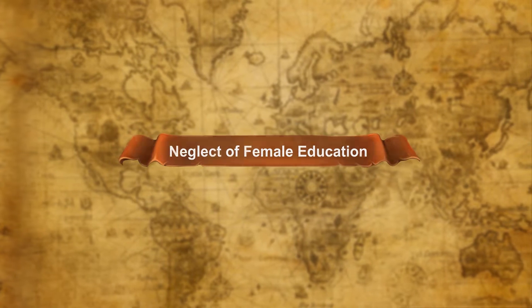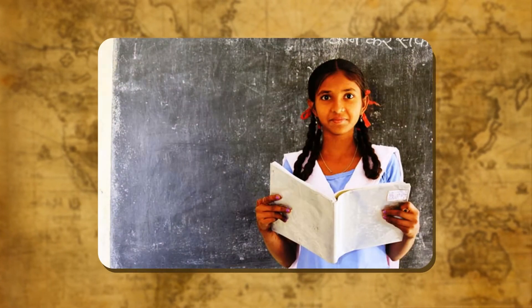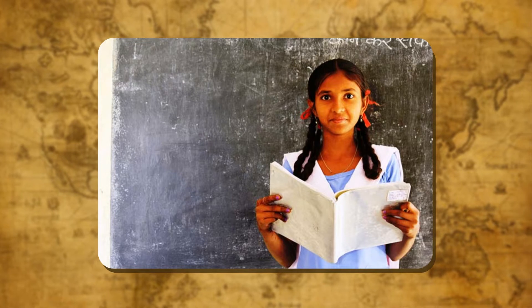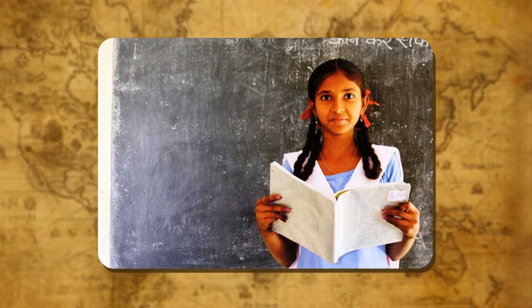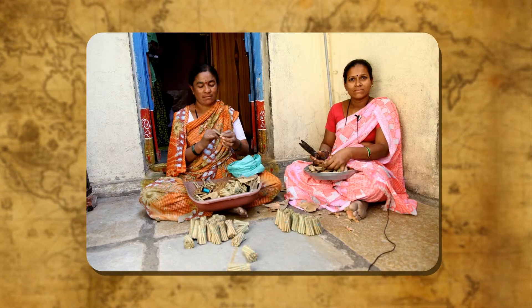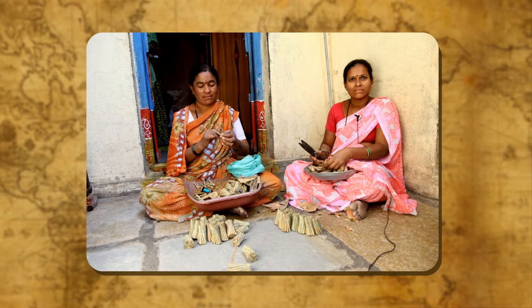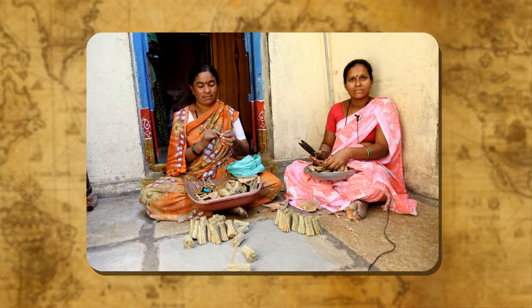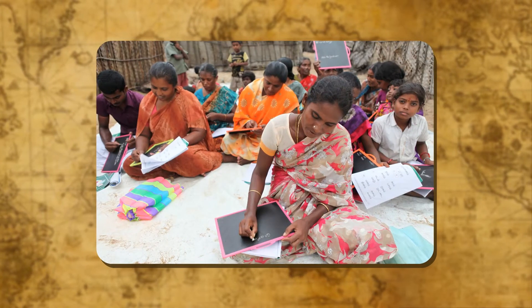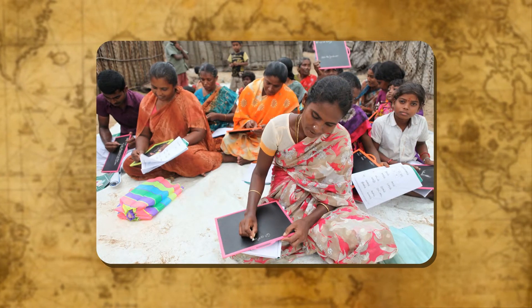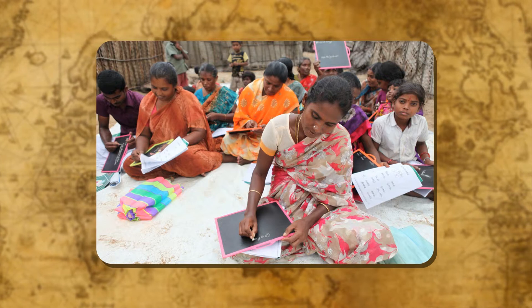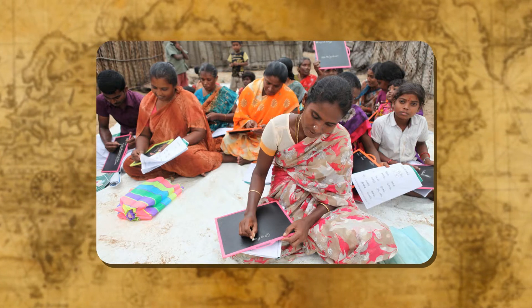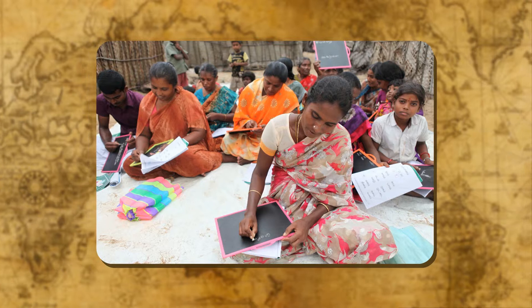Neglect of female education: In India, it was considered useless to educate girls as they were not required to seek employment. Equal opportunities are not provided to women. Women in villages spend a large part of their day doing household chores. The school dropout rates are higher among women. The choice of subjects taught in school and values given reinforce traditional roles of women.